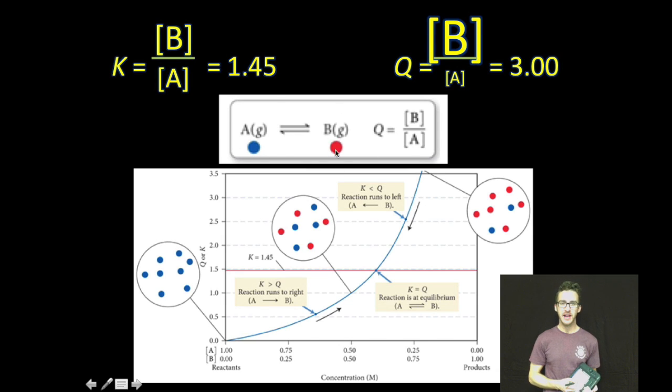For this generalized reaction, the equilibrium constant is 1.45. We're trying to identify what happens when K is less than Q. So I've set up here on the right a Q value that's greater than K. What that means is at the moment that we measured our concentrations, we had a larger amount of product than reactant than there is at equilibrium. Boom, K is less than Q.